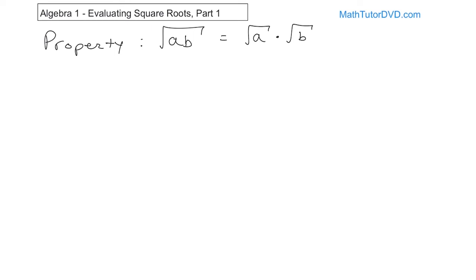Let's take a look at the square root of 16. You already know that to find the square root of 16, you want to figure out what times what gives you 16. You know that 4 times 4 gives you 16 — it's a perfect square — so the answer is 4. But let's pretend you didn't know that. Inside this radical, 16 can be written as 4 times 4. All I did was take the 16 and replace it with 4 times 4.